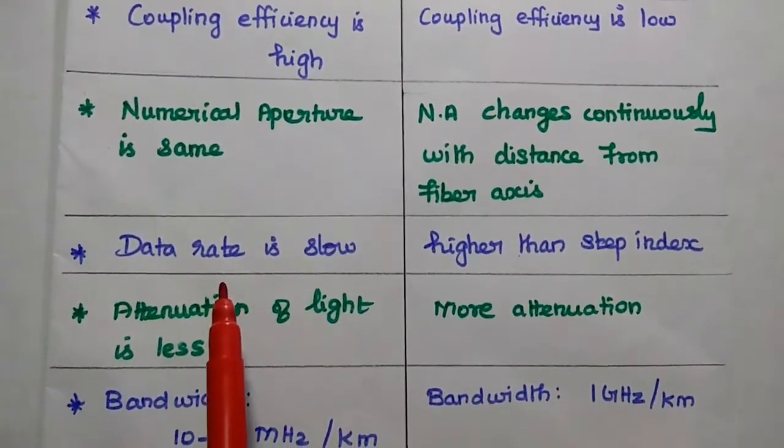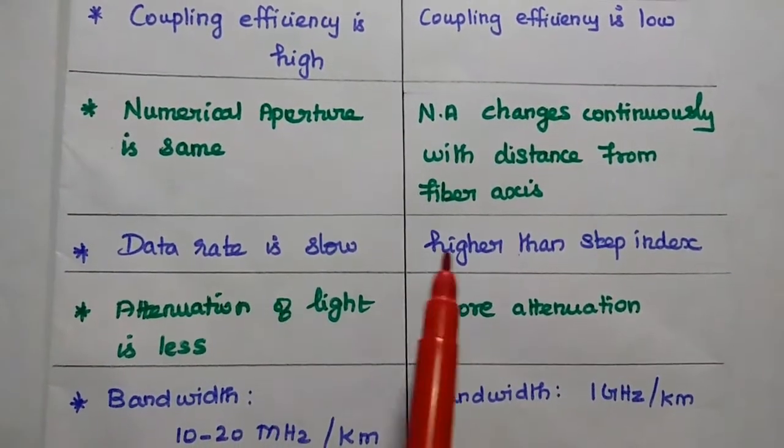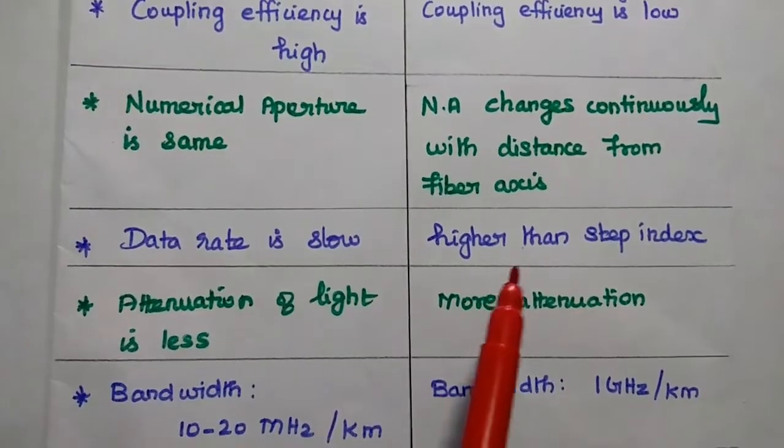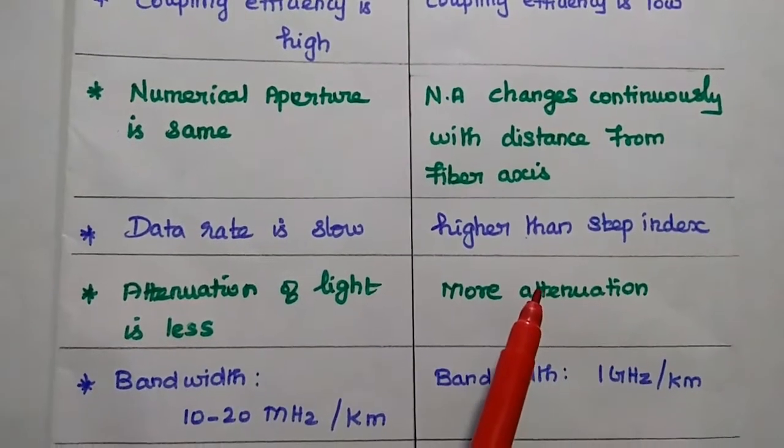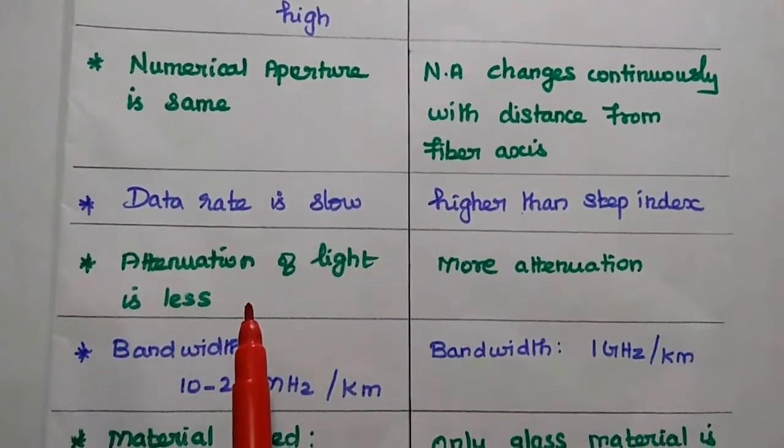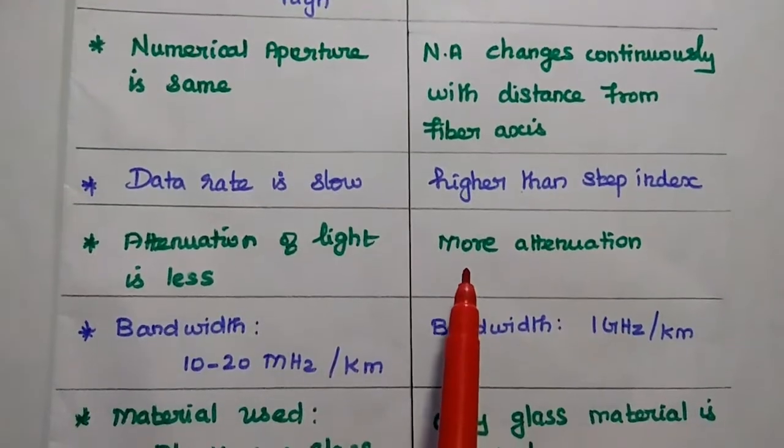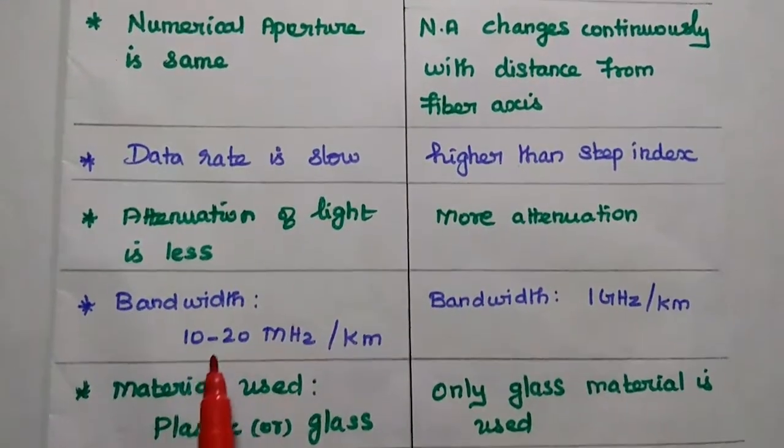The data rate is low in the step index, but in this one it is higher than step index. It has less attenuation of light, but it has more attenuation.